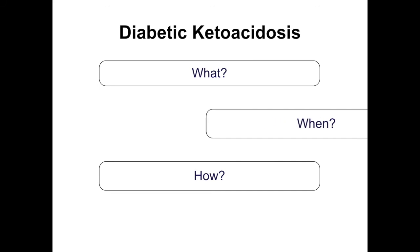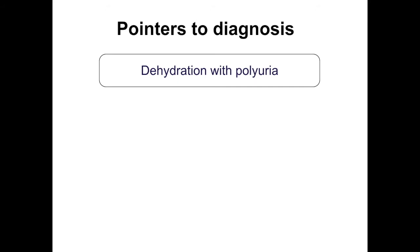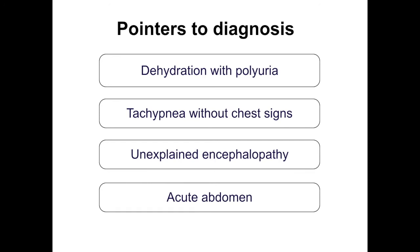When to suspect DKA: this is a do-or-die matter. Diagnose it and the child will be safe; miss it and there is significant mortality risk. Suspect DKA in every child with dehydration and polyuria — a dehydrated child passing large amounts of urine suggests the urine output is causing dehydration, which can occur in DKA, adrenal insufficiency, tubular necrosis, or diabetes insipidus. Also suspect DKA if a child has tachypnea without chest signs, unexplained encephalopathy, or acute abdomen. DKA can also show high amylase and lipase, leading to a false diagnosis of pancreatitis.